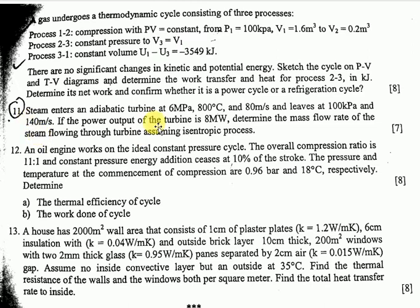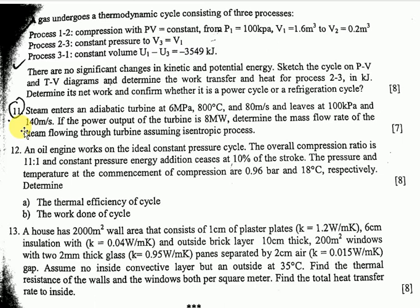Question number eleven from Chapter 6 (second law of thermodynamics): the power output of a turbine is 8 megawatts. Determine the mass flow rate of steam flowing through the turbine assuming an isentropic process — use steam tables.